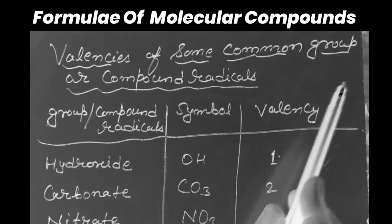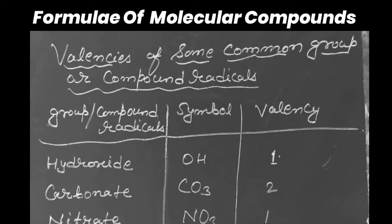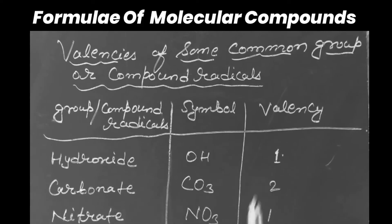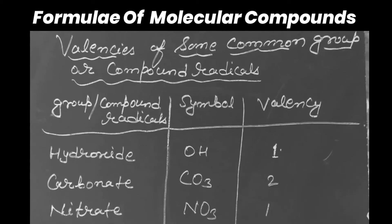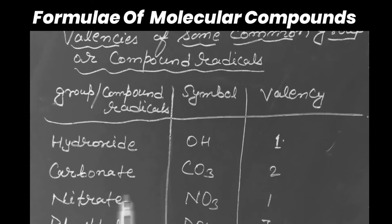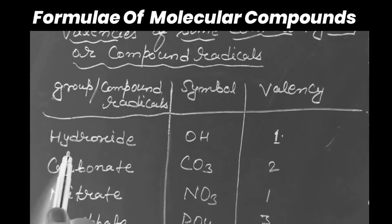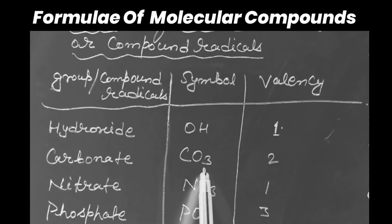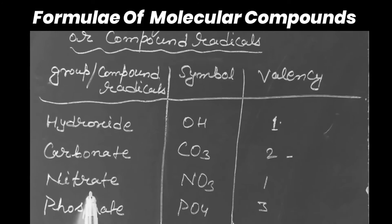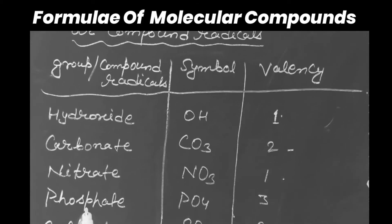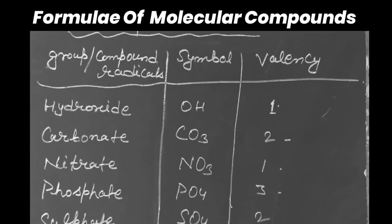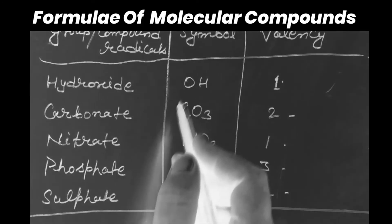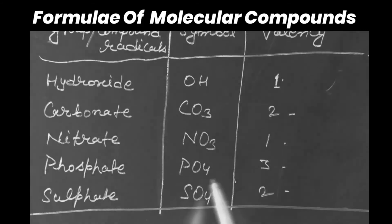Now let's look at the valencies of some common groups or compound radicals. Hydroxide OH, valency 1. Carbonate CO₃, valency 2. Nitrate NO₃, valency 1. Phosphate PO₄, valency 3. Sulfate SO₄, valency 2. Now we have to understand how these radicals take part during chemical reactions.